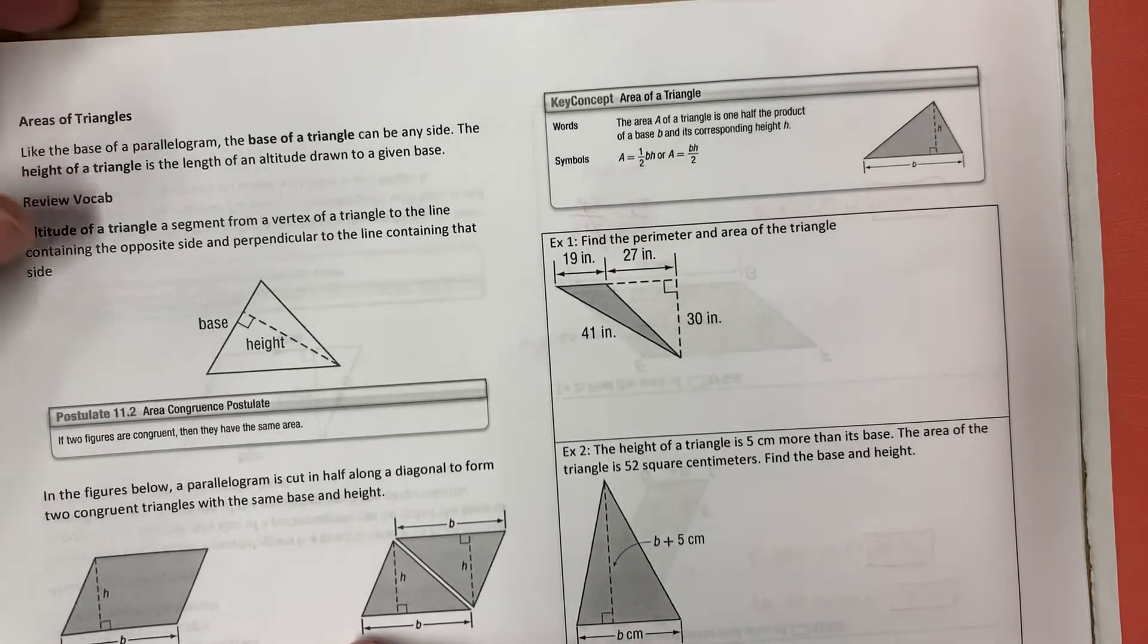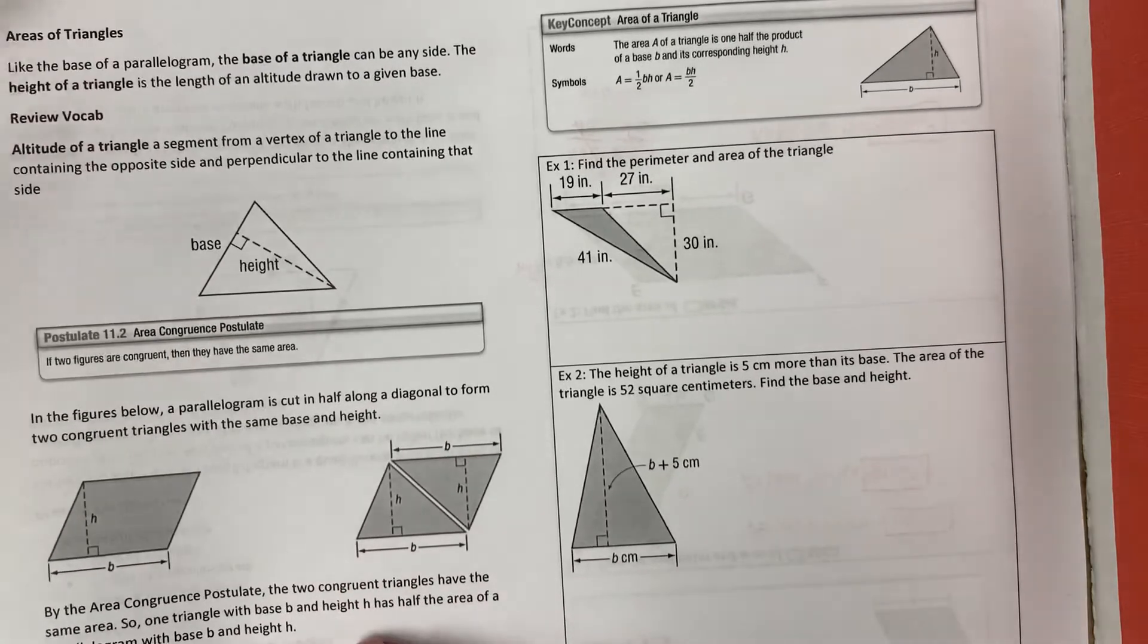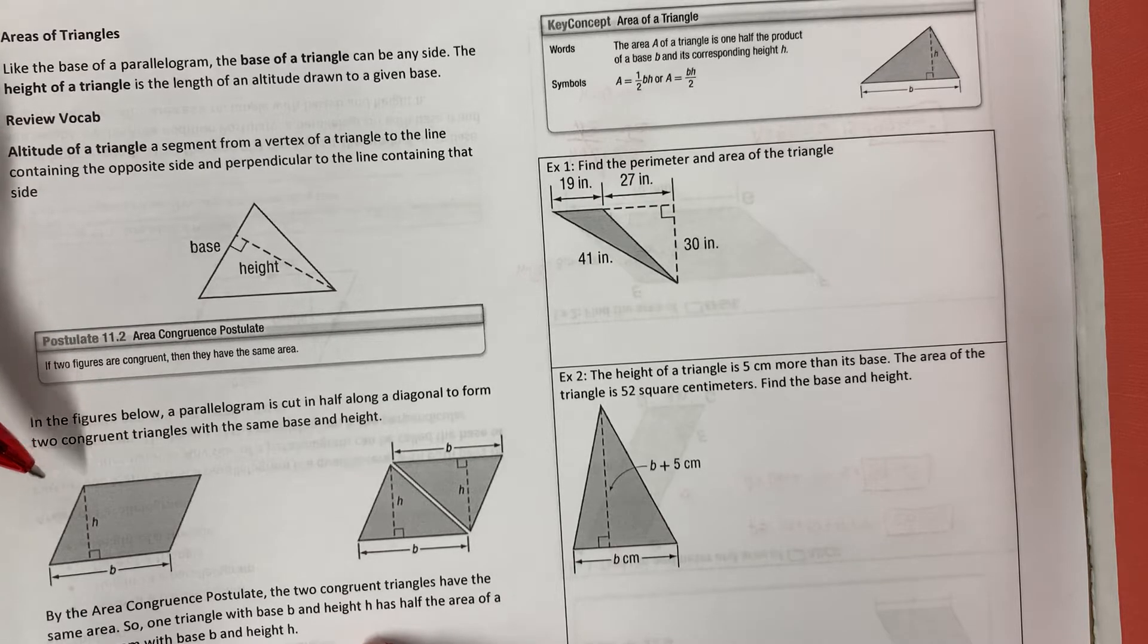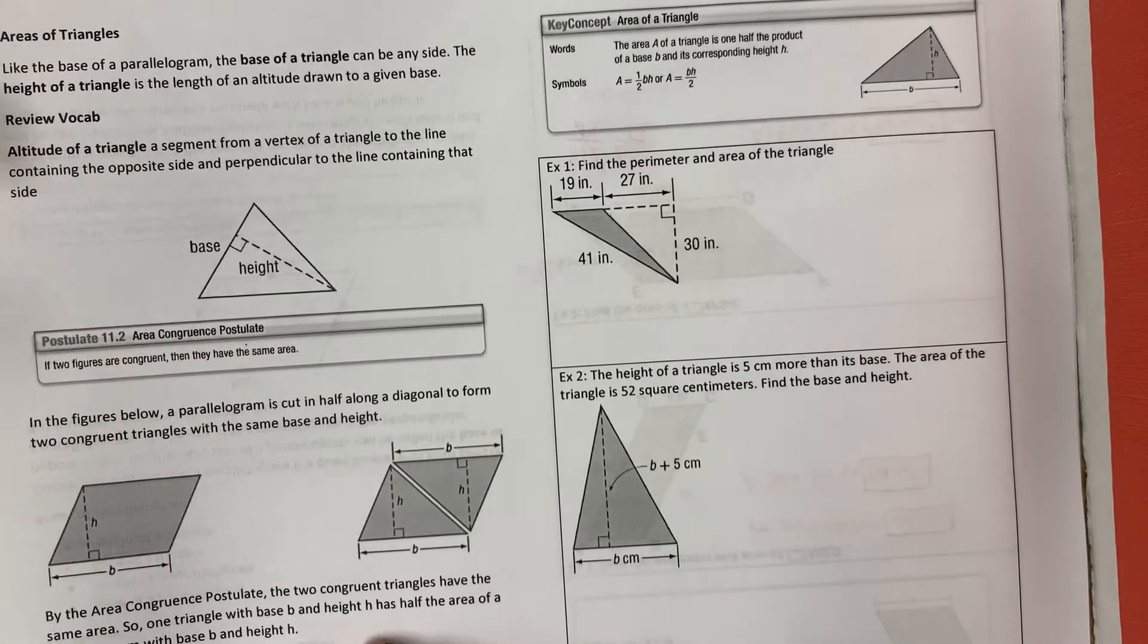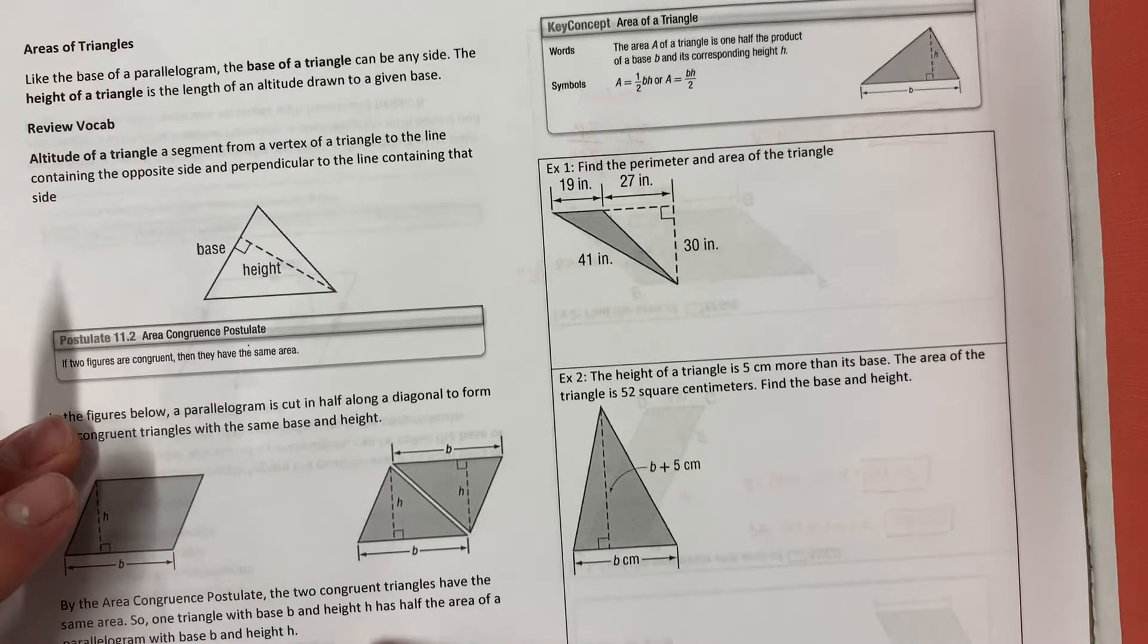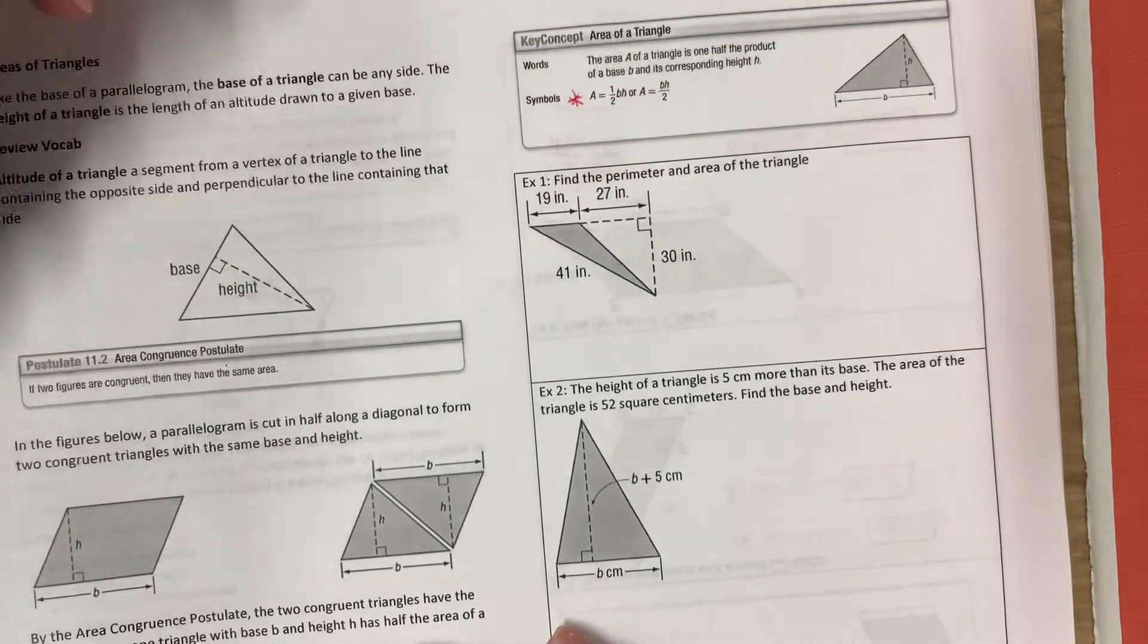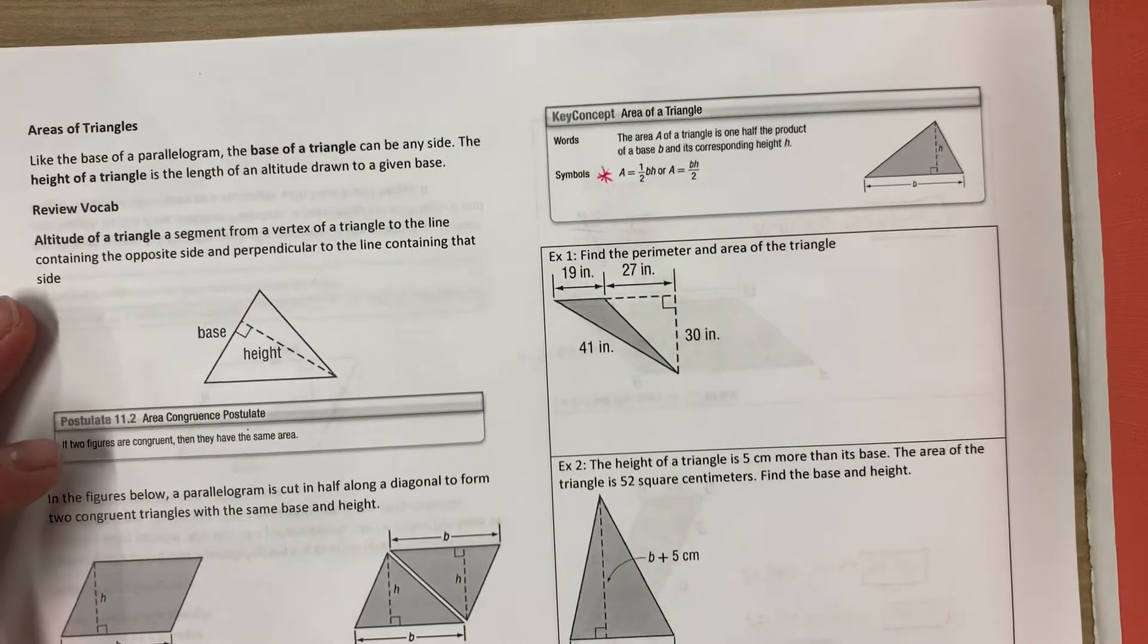So if two figures are congruent, then they have the same area. In the figures below, a parallelogram is cut in half along a diagonal to form two congruent triangles with the same base and height. By the area congruence postulate, the two congruent triangles have the same area. So one triangle with base B and height H has half the area of a parallelogram with base B and height H, which is where we get our area formula for a triangle: area is one half base times height.